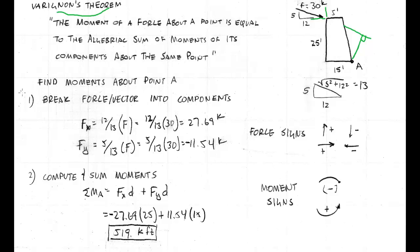The first step is to break the force or the vector into components. So we have this force here, 30 kips, in a 5-12-13 triangle by the Pythagorean theorem. To find the X component, it's 12/13 of 30, or 12/13 of the force, which is 27.69, and that is to the right, so it's positive.